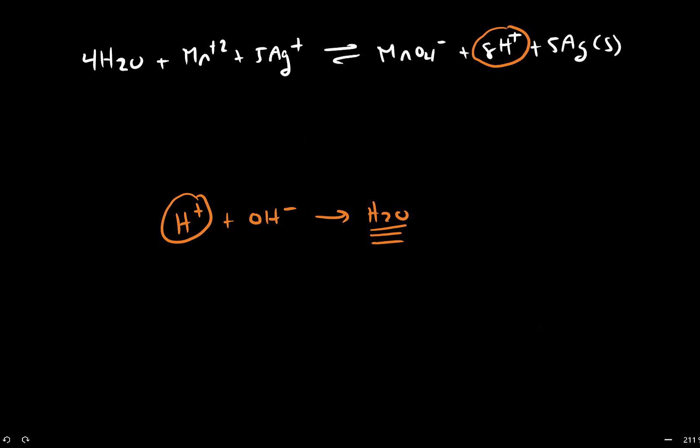So if we apply this logic to our chemical reaction, if I were to add eight hydroxide molecules onto the product side of this reaction, then those eight hydroxide molecules would react with my eight protons to give me eight waters.